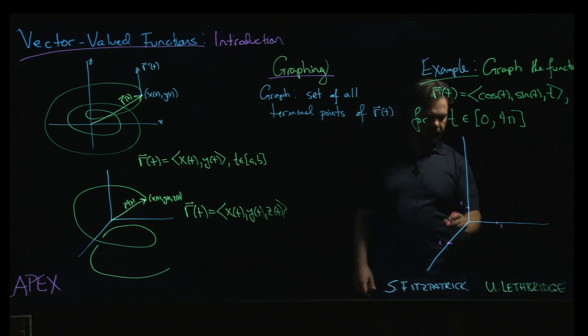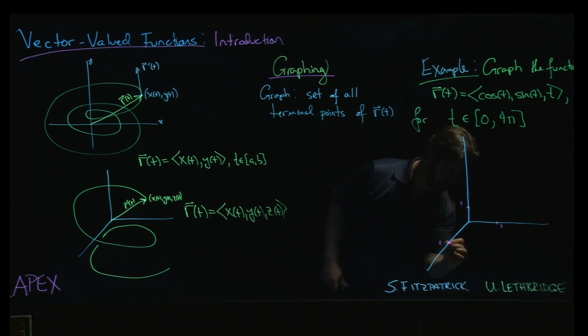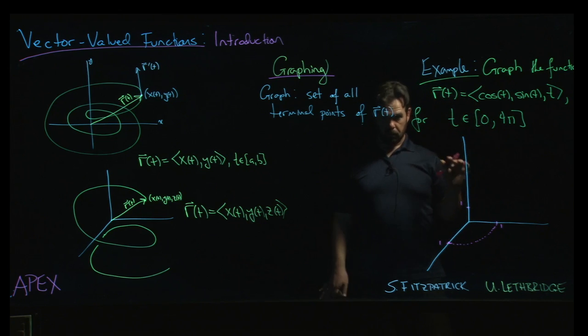Now, what happens as t goes from, say, zero to pi over two? Well, I mean, on the one hand, if we didn't have the z component, we know we'd just be tracing out that circle, right, in the xy-plane.